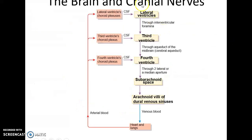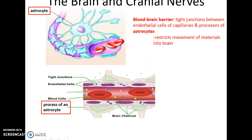To summarize the flow: lateral ventricles connect via the interventricular foramina into the third ventricle, via the aqueduct of the midbrain to the fourth ventricle, via the lateral or median apertures to the subarachnoid space, and eventually the fluid returns via the arachnoid villi into the dural venous sinuses, where it is carried away by the bloodstream.